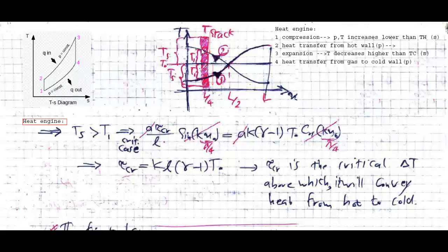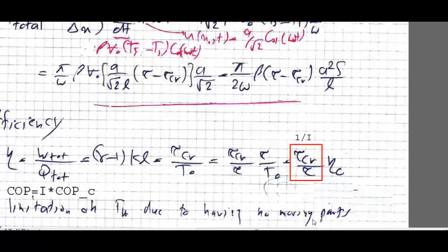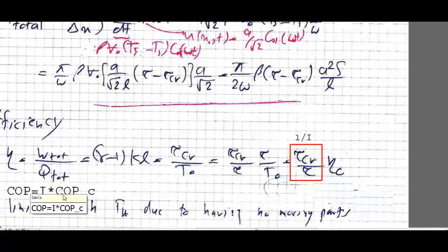If the amplitudes are identical there is no heat transfer between the gas and the stack — this is the critical condition, expressible as a specific relation. The efficiency of the thermoacoustic heat engine can be defined as the product of the Carnot efficiency and a ratio whose numerator is the critical temperature difference and denominator is the temperature difference between the hot and cold reservoirs. If the device operates as a heat pump or refrigerator, the coefficient of performance (COP) is the product of that ratio and the COP of the Carnot cycle.